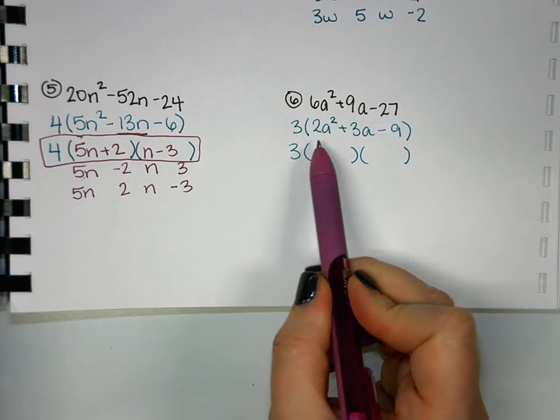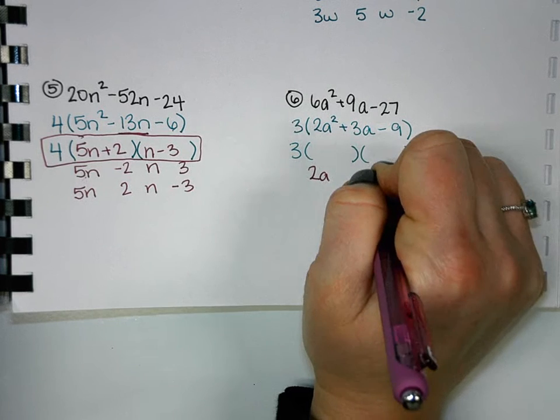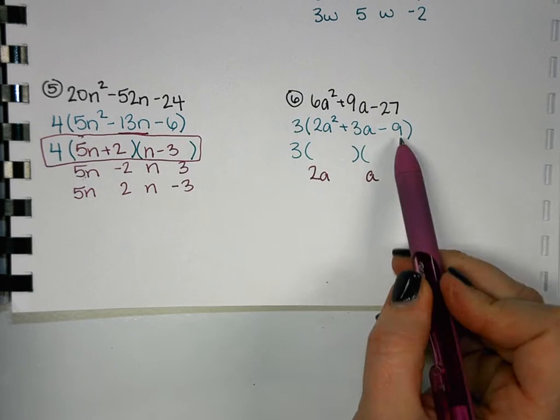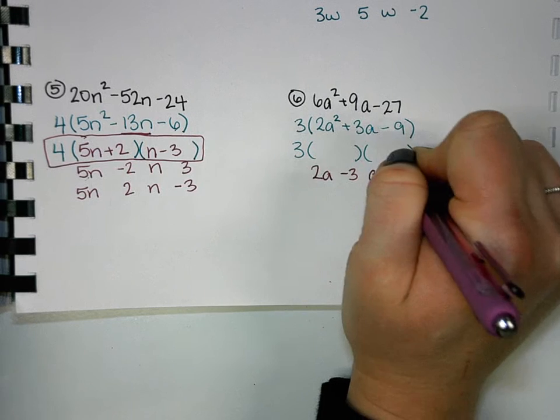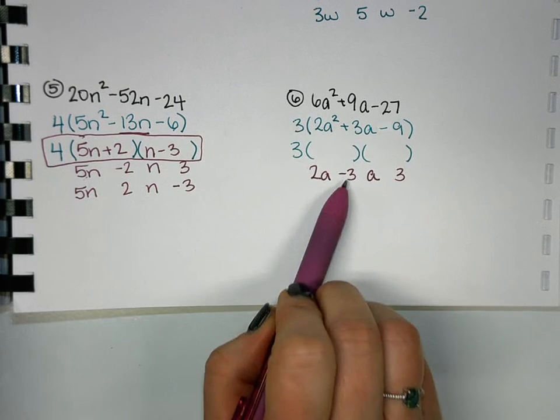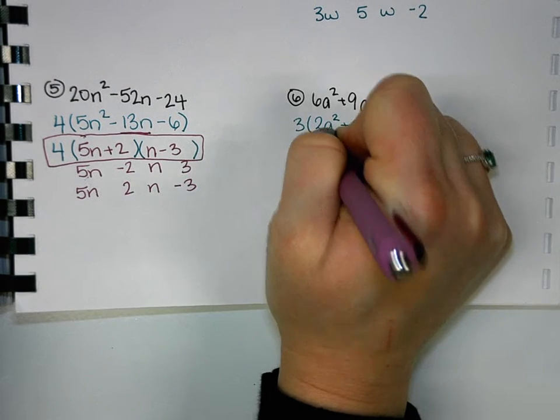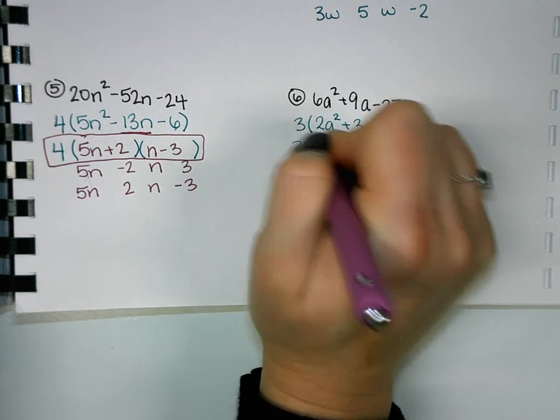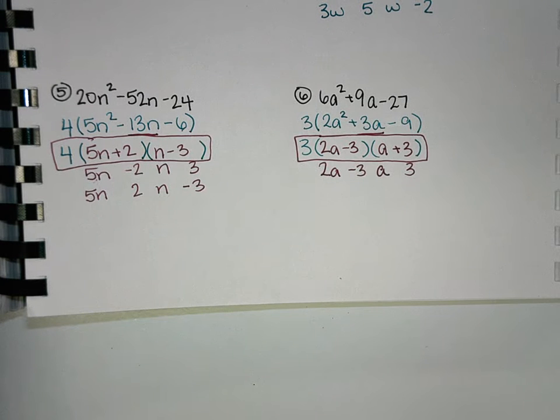So two things that multiply to 2a². 2a and a. And then two things that multiply to negative 9. Negative 3 and 3. So with where I put them, we can do our outside and get 6a, inside is negative 3a. That does in fact add up to 3. So we'll have 2a minus 3, a plus 3. And again don't forget to include in your final answer that GCF. So some of your problems today are going to have this GCF that you might have to take out first, but it makes your numbers smaller so that they're a little easier to manage.